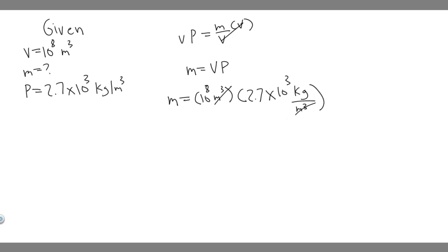If we just do this calculation, we can add the exponents. So the mass is going to be 2.7 times 10 to the 3 plus 8, which becomes 11. So 2.7 times 10 to the 11 kilograms.